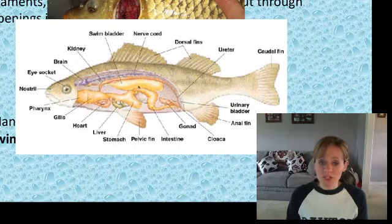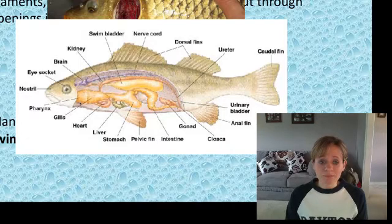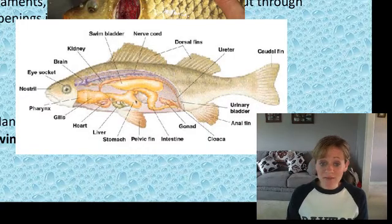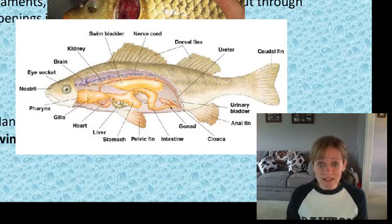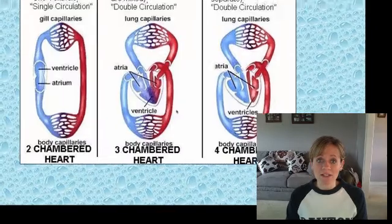Here's a picture of fish anatomy. Here's the swim bladder. They have a nerve cord — they are chordates. Here are their gills, their heart, a tiny liver, stomach, intestines, and gonads. They also have a cloaca, which is a common reproductive opening, and amphibians also have that.